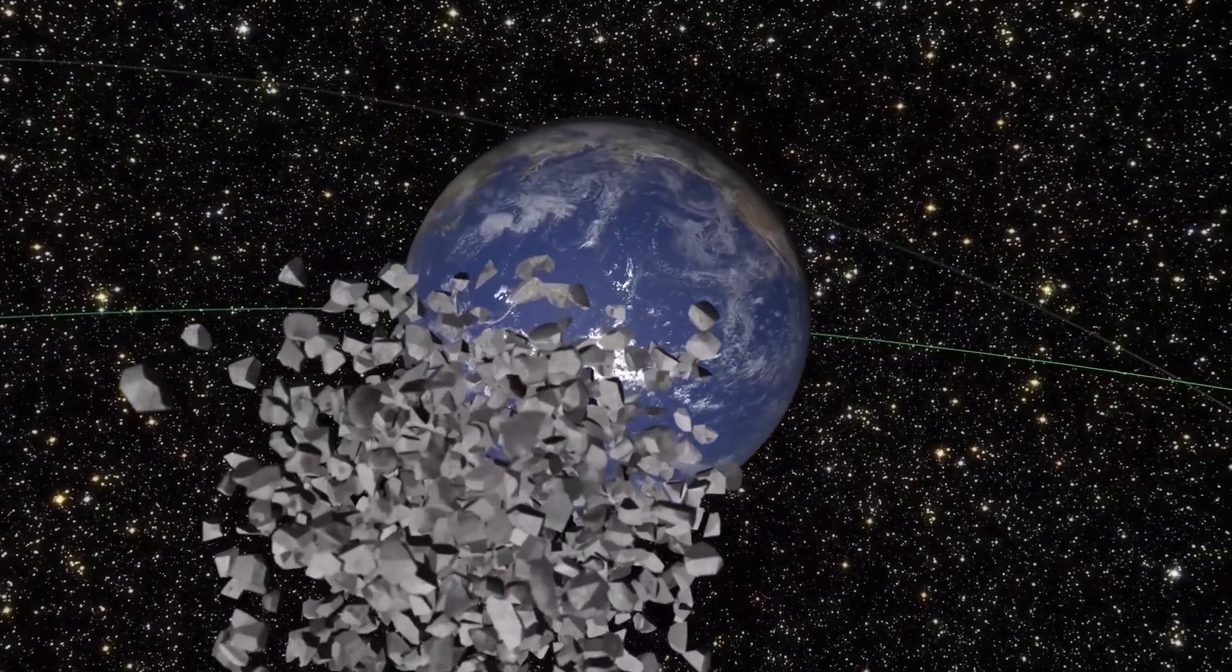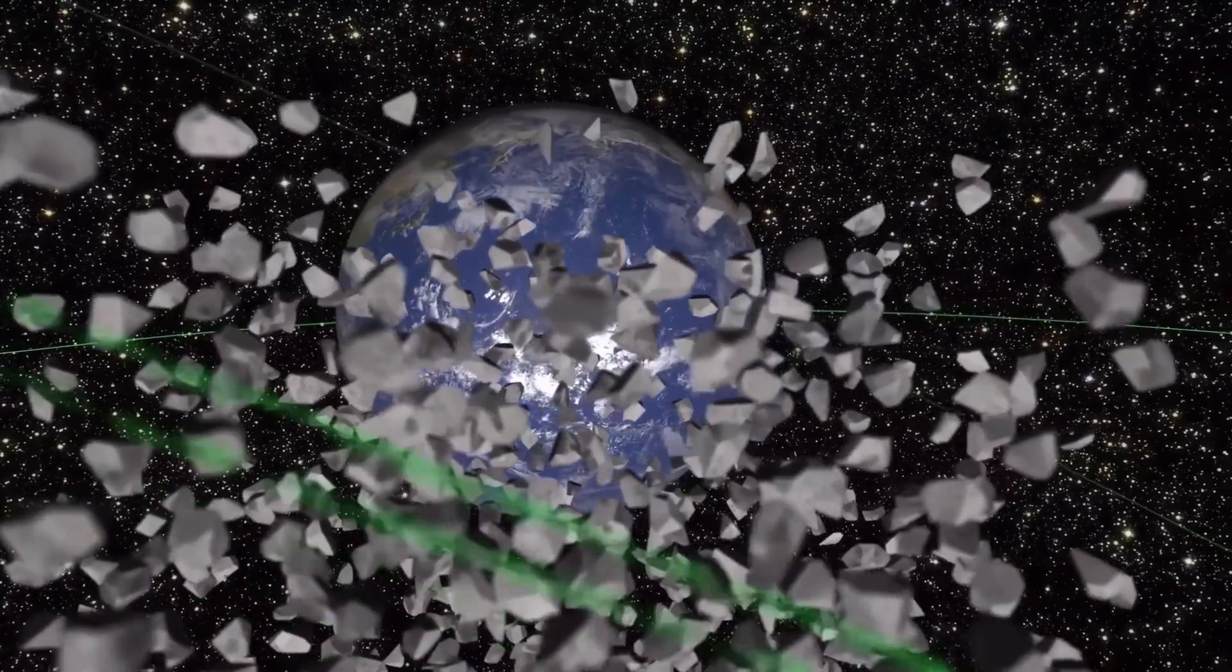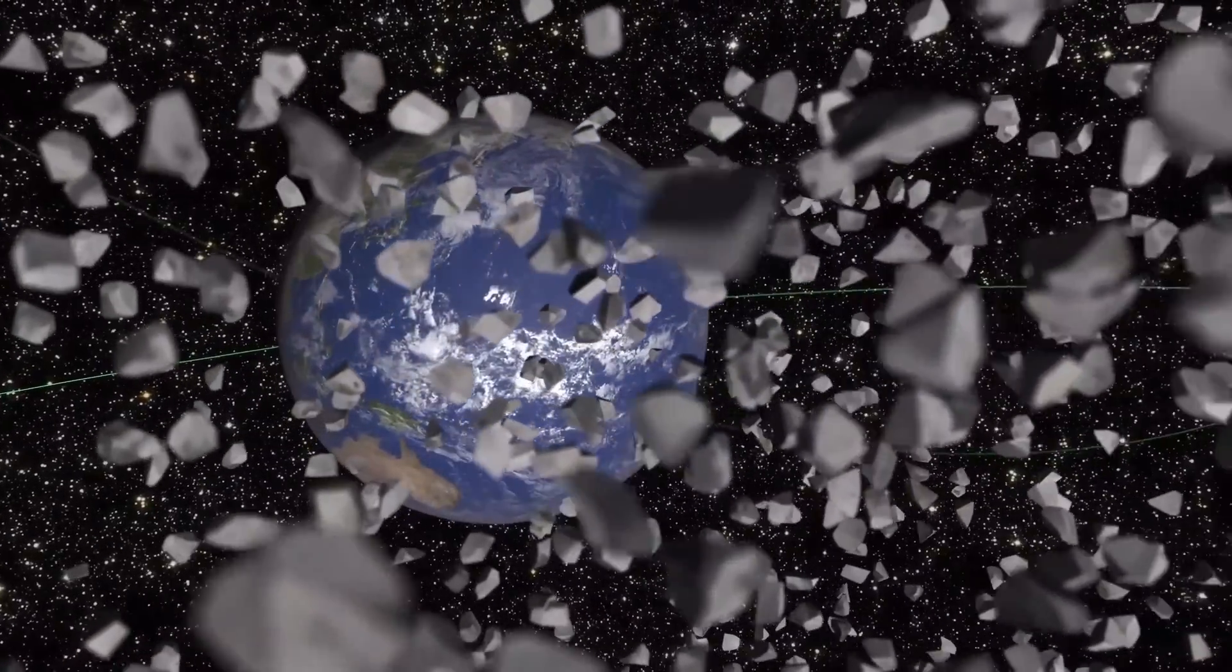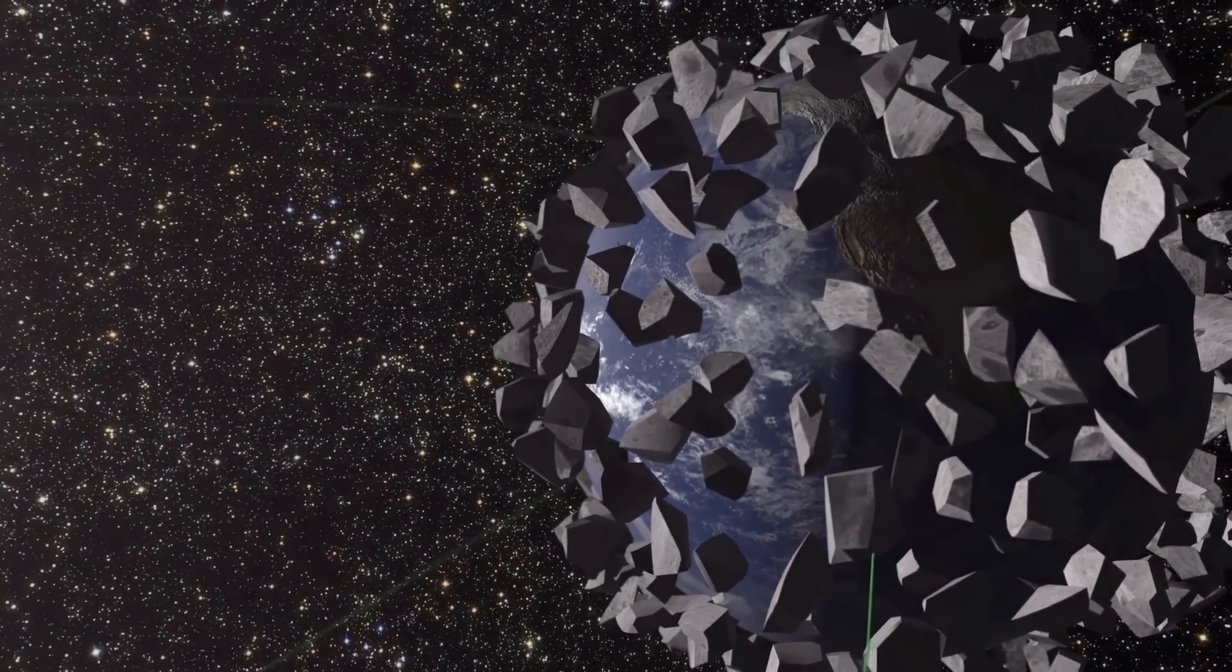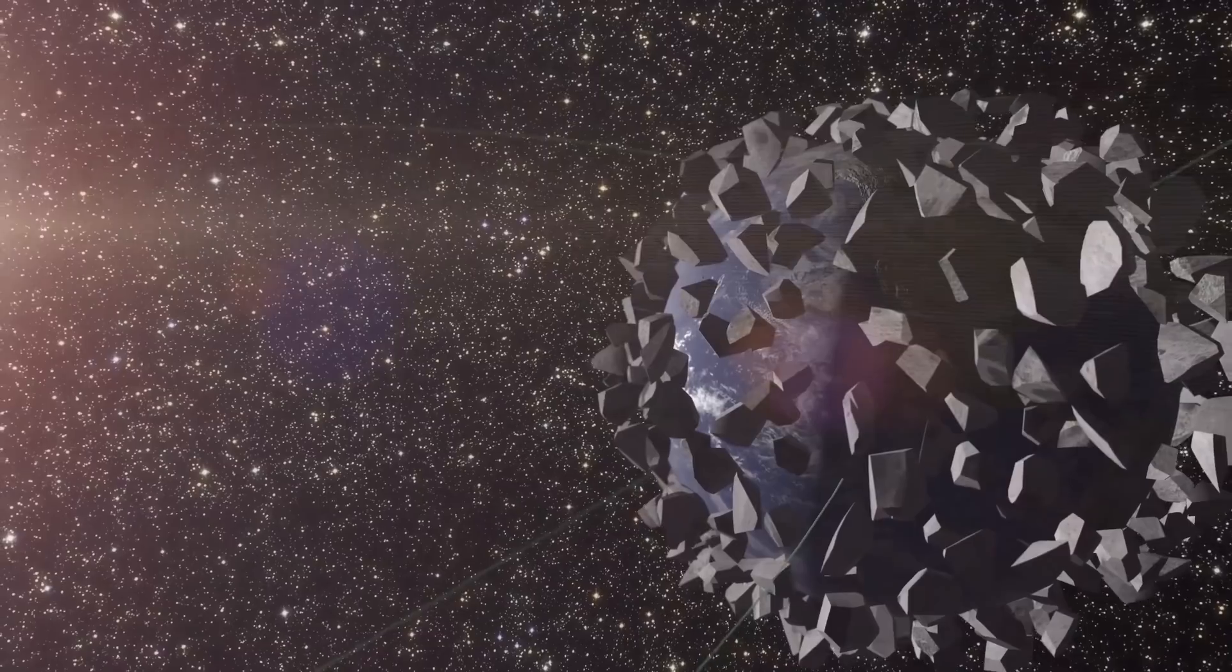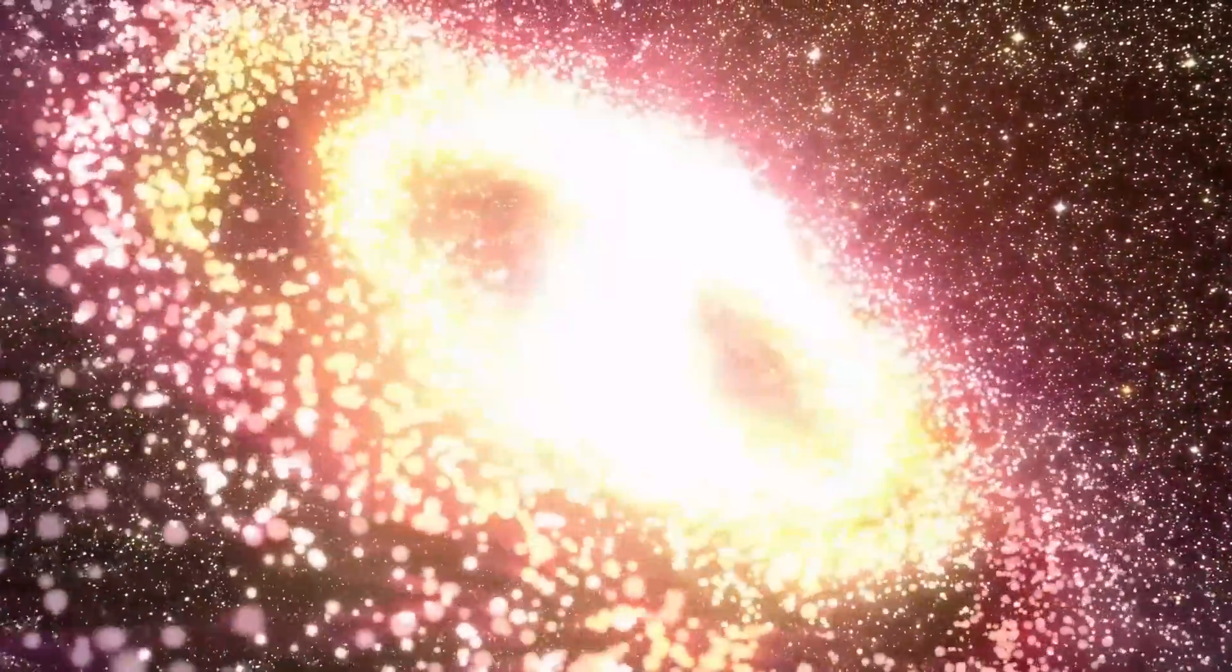Most likely, this won't be a head-on collision in which both celestial bodies are flattened against each other. When approaching our planet, the Moon will be torn into pieces, which will crash into the Earth. As a result, fragments of the Moon and fragments of the Earth will eventually form a new celestial body.